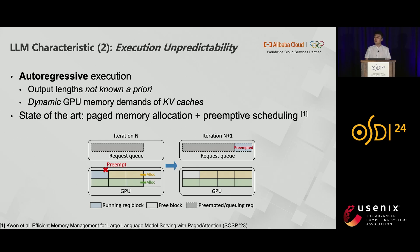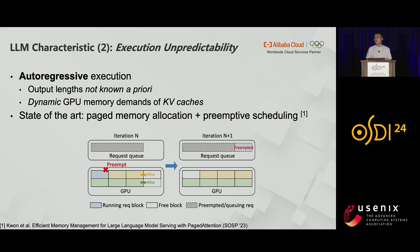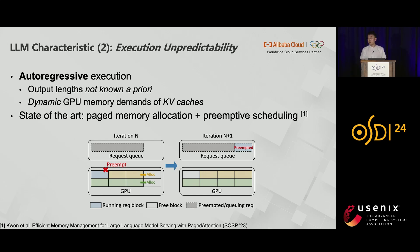During autoregressive execution, the final output lengths are not known a priori, which also comes with GPU memory demands for KV caches that dynamically grow with the sequences. State-of-the-art systems use paged attention for dynamic memory allocation for KV caches, combined with preemptive scheduling. Because if you cannot know the final KV cache sizes in the beginning, you might have to preempt certain requests when you run out of memory.